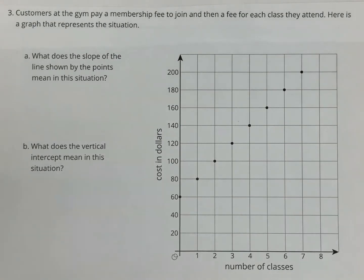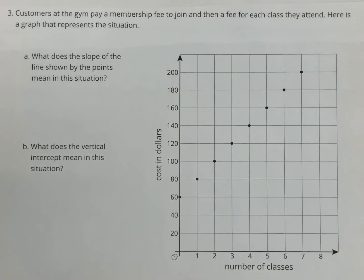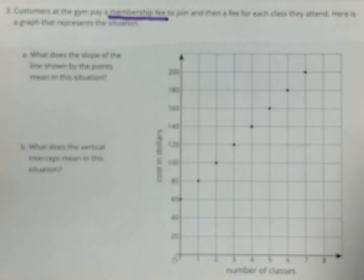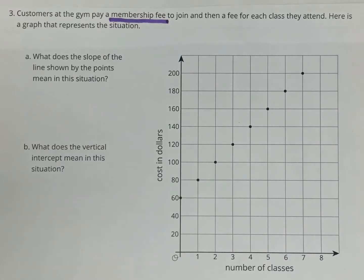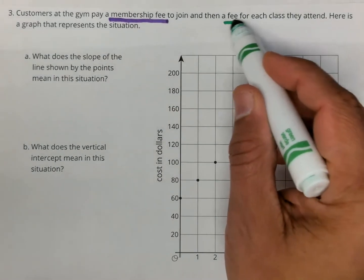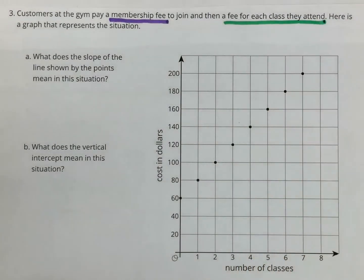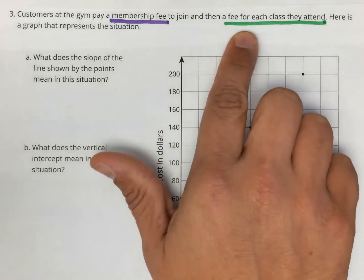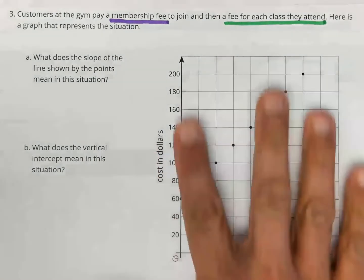In this situation, there are two things happening. The first thing is the membership fee to join. When you're signing up for a gym, you only pay this fee one time. The second thing is the fee for each class the members attend. The more classes you take, the more you're going to pay. So with those two things in mind—the membership fee you only pay one time, and the fee for each class depending on how many classes you take—now let's look at the graph.